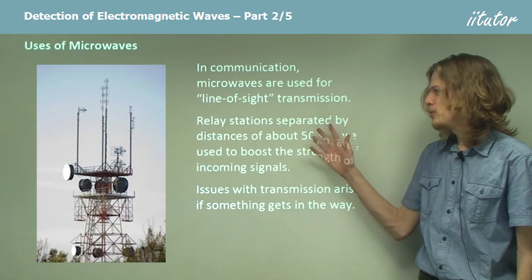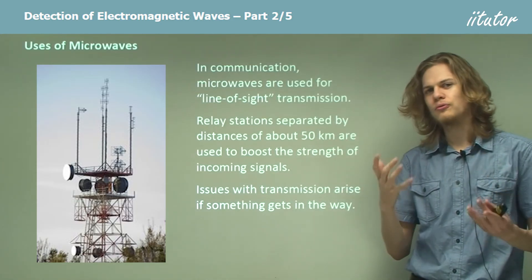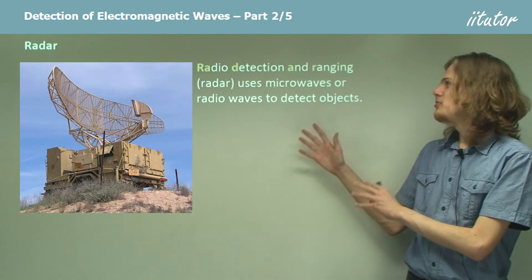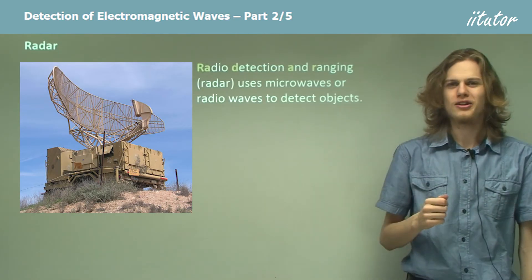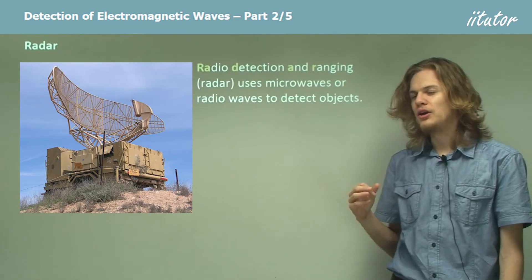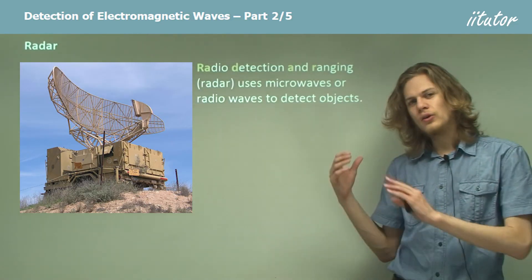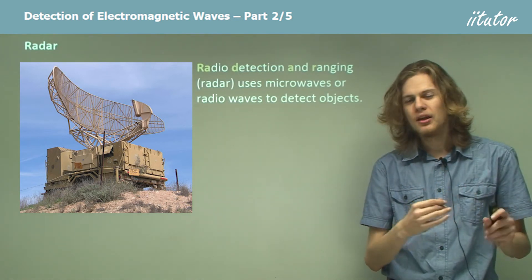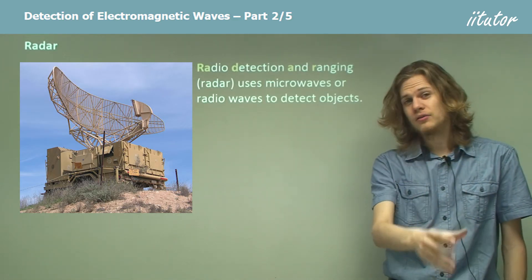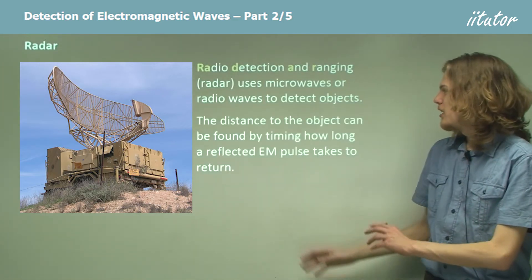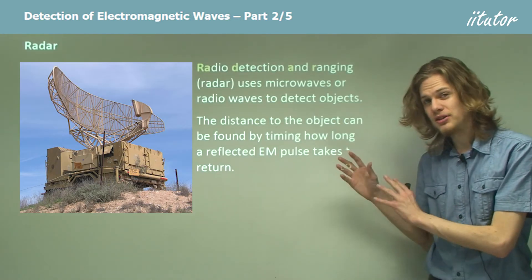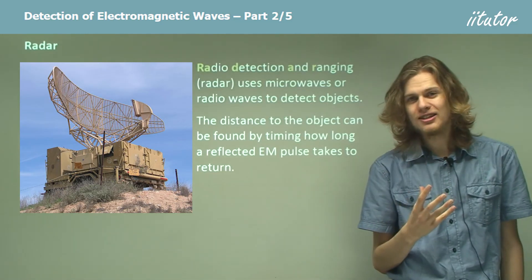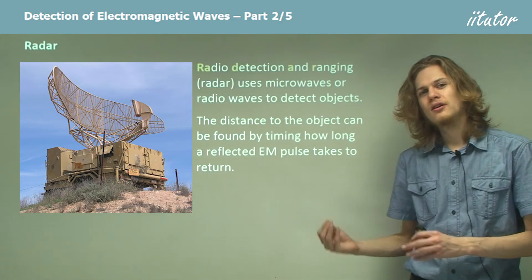Both radio waves and microwaves can be used to detect distant objects. Radio detection and ranging, also known as radar, is a way of using microwaves or radio waves to detect objects. Just like sound waves, if a microwave or radio wave collides with an object or goes into a different medium, part of it will be transmitted through and part will bounce back. If we measure the time it takes for the wave to travel to the object and back, we can figure out how far away it is — just like using sound waves for sonar.